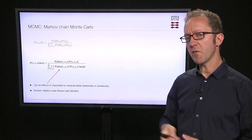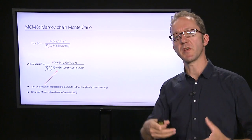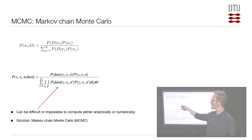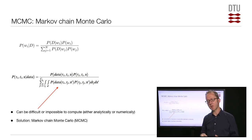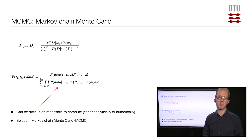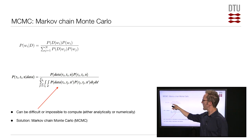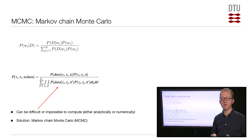You'll recall from a previous slide that we compute the posterior probability that some set of parameters W are true given the data using Bayes' theorem. In that example, I was assuming we were looking at different discrete possible values of the parameters W, and we could therefore have a sum in the numerator which, according to the law of total probability, gave us the total probability of the data D.